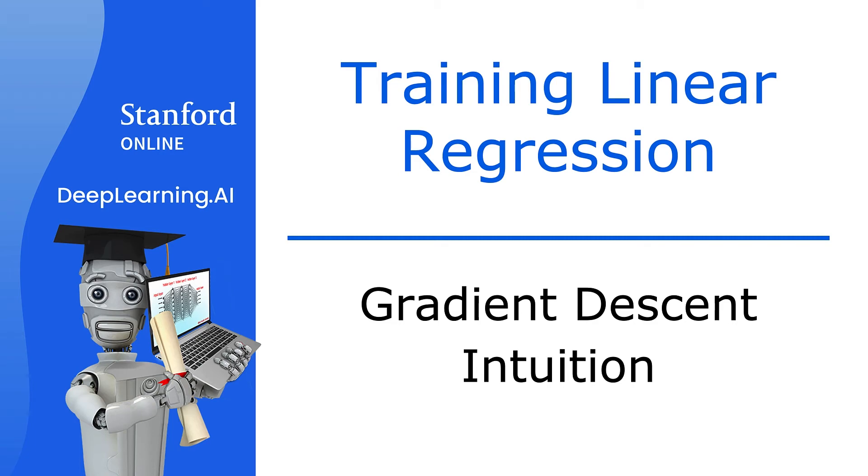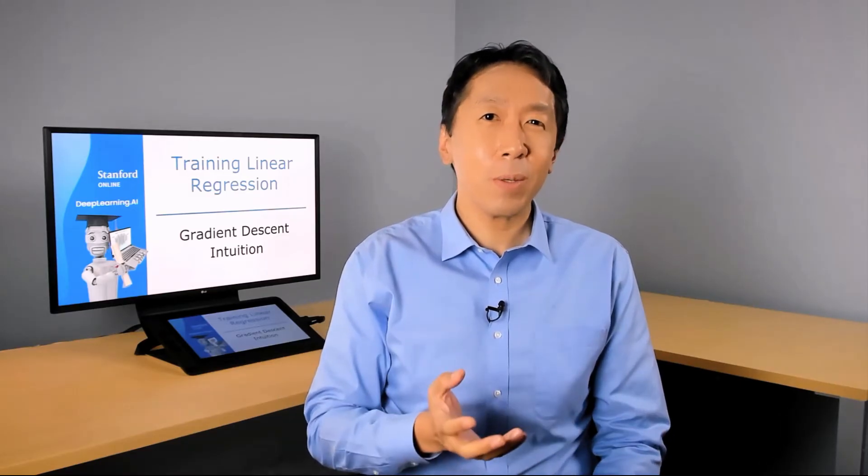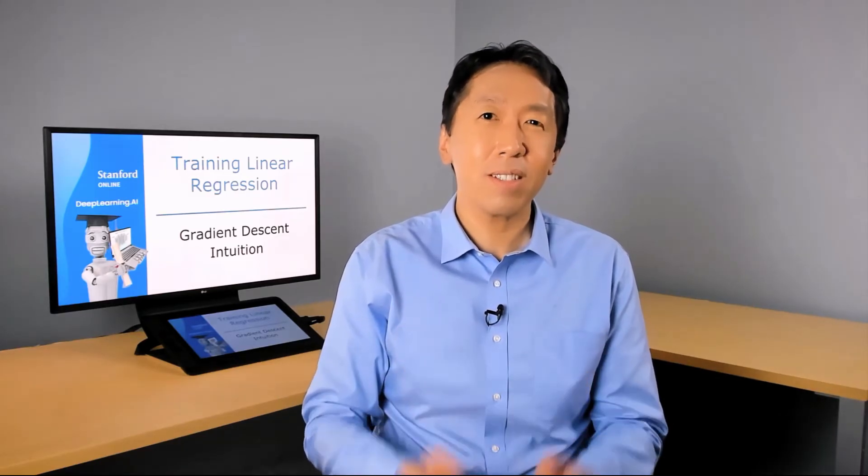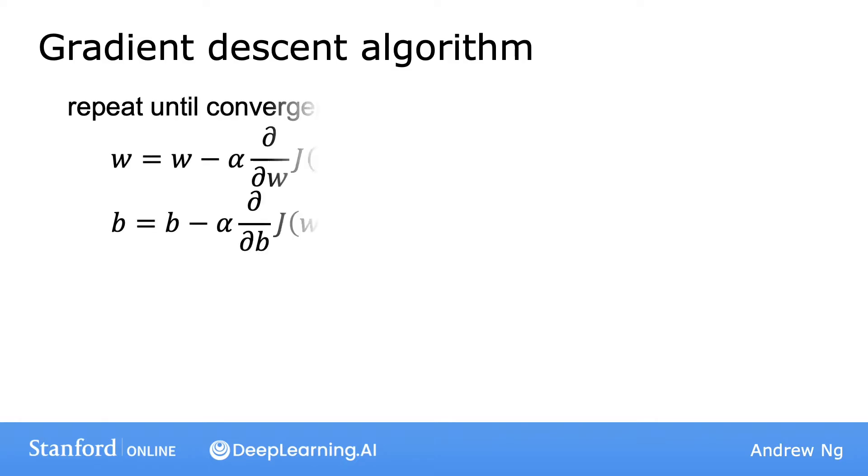Now, let's dive more deeply into gradient descent to gain better intuition about what it's doing and why it might make sense. Here's the gradient descent algorithm that you saw in the previous video. As a reminder, this variable, the Greek symbol alpha, is the learning rate. The learning rate controls how big of a step you take when updating the model's parameters w and b.